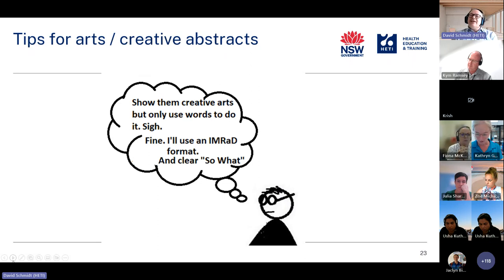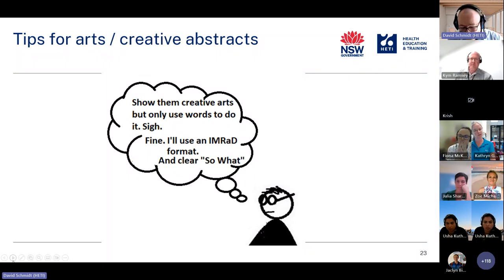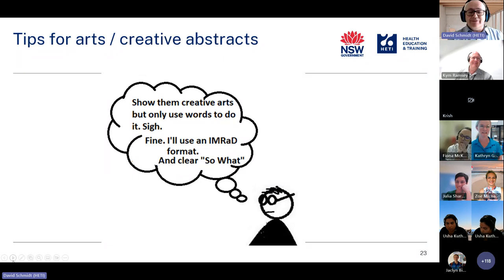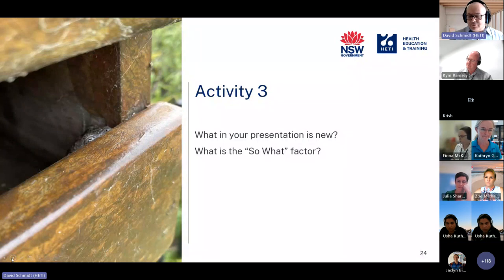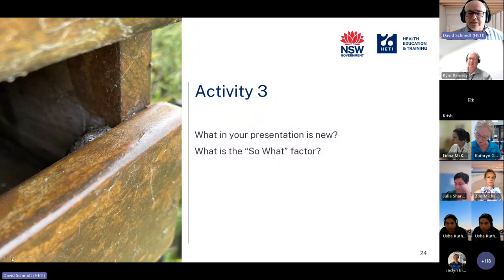For arts and creative abstracts it gets a little tricky, because you're not allowed to use pictures and you can't do a video of interpretive dance or whatever your creative thing is. For creative type abstracts, you have to do the best you can — stick with the familiar format, use words, and make sure the so-what factor is really, really clear.